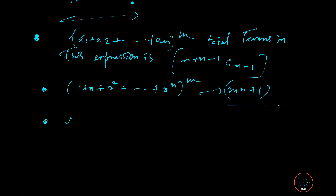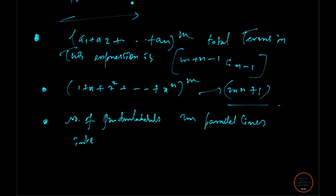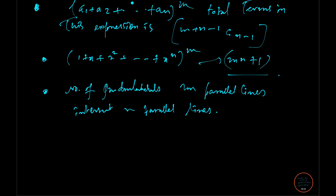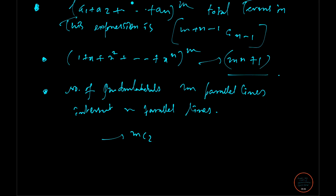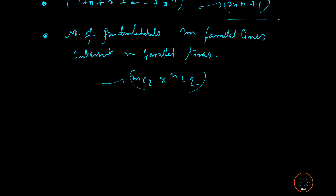Next: the number of quadrilaterals that can be formed if M parallel lines intersect N parallel lines. The formula is MC2 × NC2. That is the formula you apply to get your answer. Now I'm proceeding to some more advanced topics.